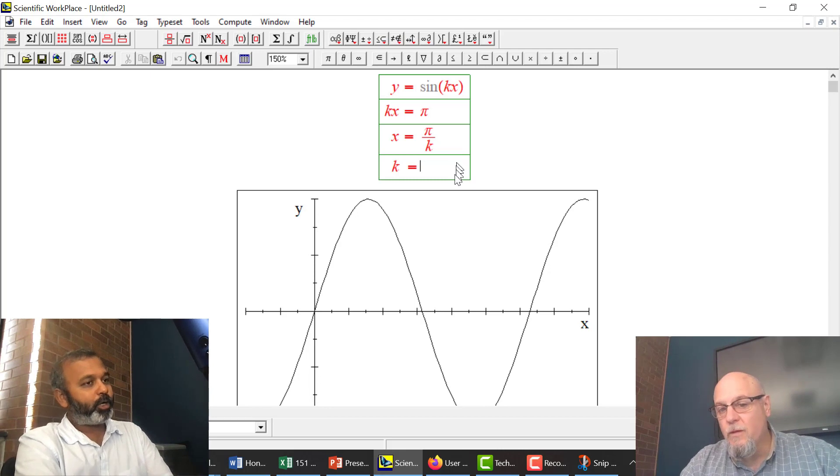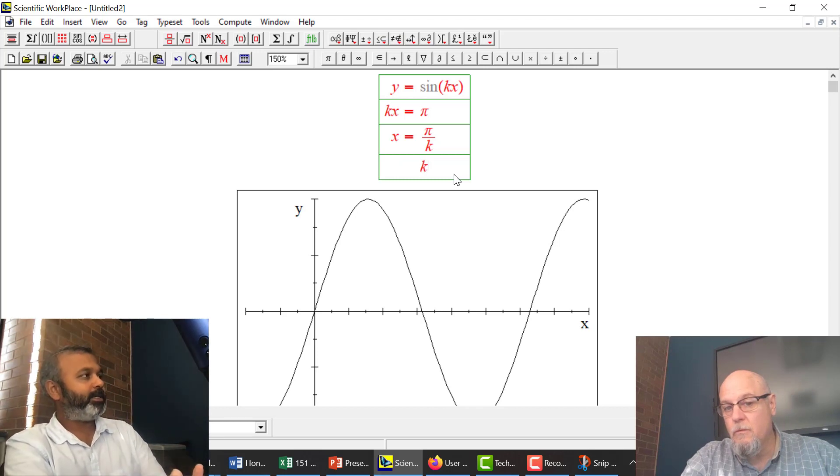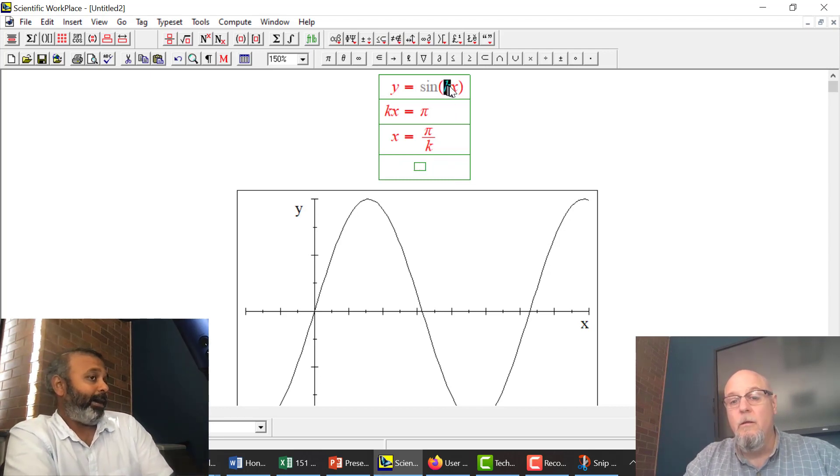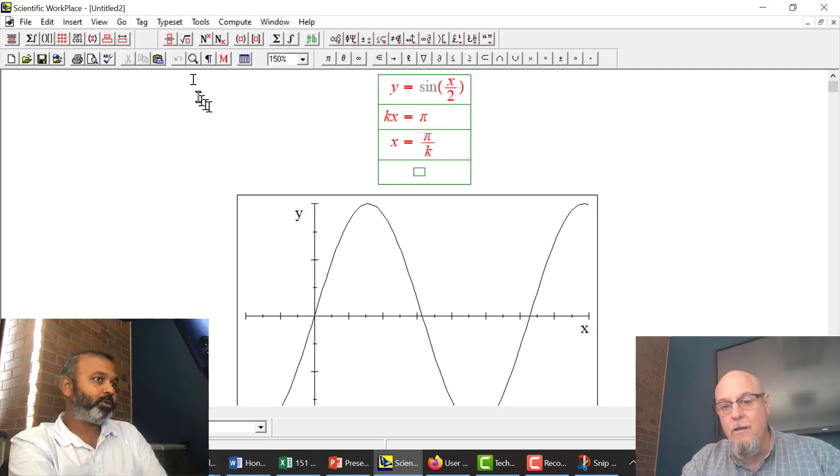But not to make things more complicated, we've been saying k, we said 2, we said 8. What if k is a fraction? For example, one half. So I'm going to put now one half times x, or you might see that as that. But I'm still making k being a half.